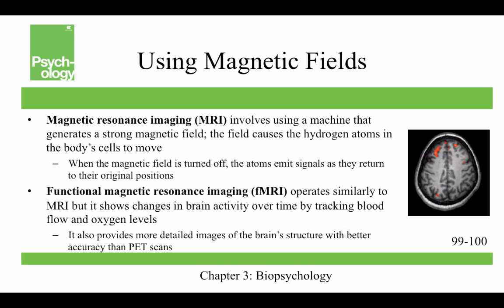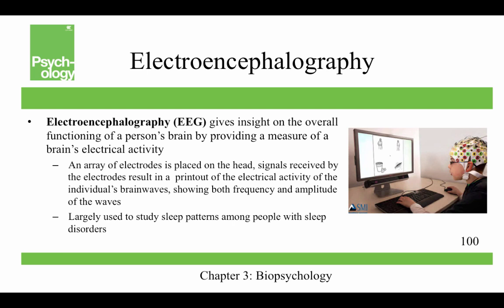Magnetic resonance imaging, or MRI, uses a machine that generates a strong magnetic field, causing hydrogen atoms in the body's cells to spin in the same direction. When the field is turned off, the atoms emit signals as they return to their original positions, and a computer interprets that movement to construct an image. Functional MRI, or fMRI, operates similarly but shows changes in brain activity over time by tracking blood flow and oxygen levels, providing more detailed and accurate images than PET. Because of their high level of detail, fMRIs are often used to compare the brains of healthy individuals with those diagnosed with psychological disorders.